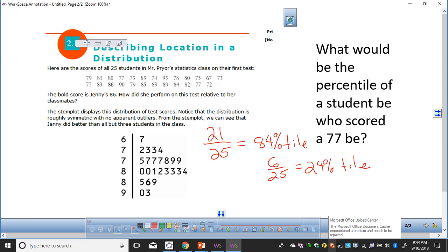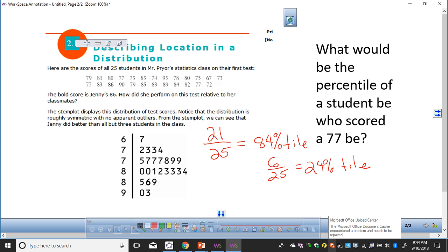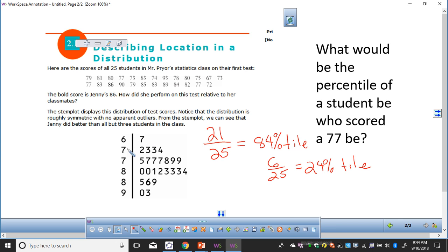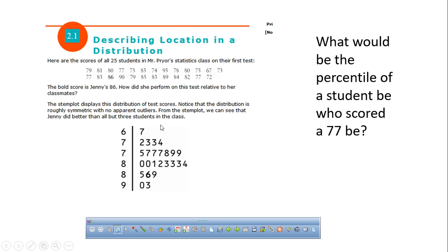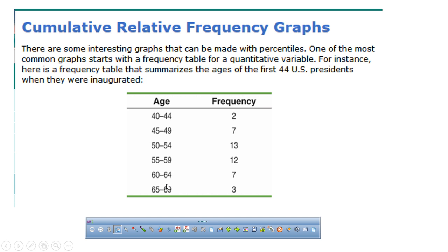So there's always going to be a zero percentile but never a 100th percentile — that is correct according to this definition.